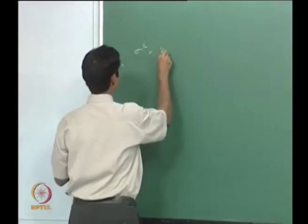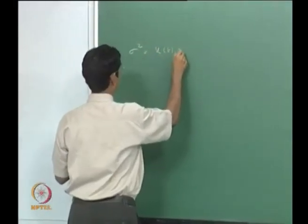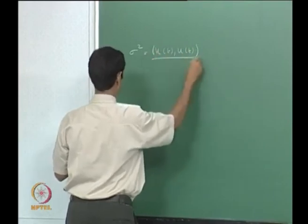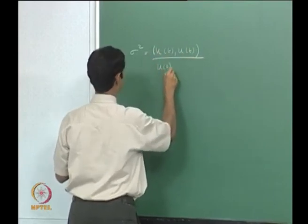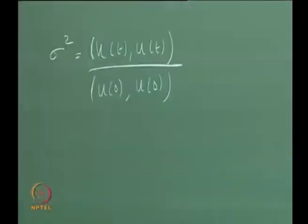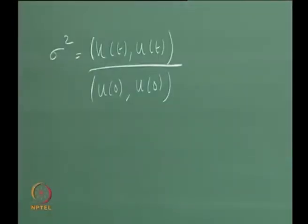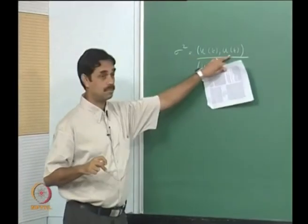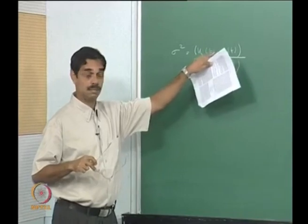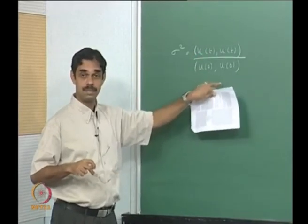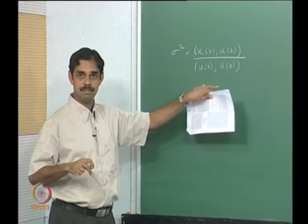I am following Farrell here, using his notation. So this is the inner product of the state vector with itself at some time t, divided by the inner product at time 0 — this is the squared two-norm — and we can rewrite this as e to the power At times u-naught. We know that is the solution.